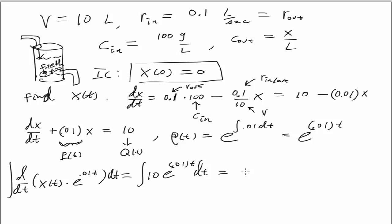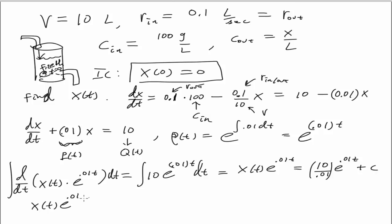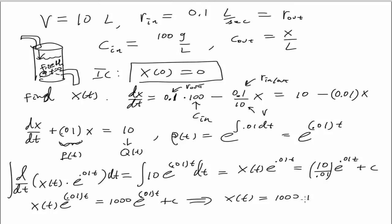Integrating both sides, we get x(t)·e^(0.01t) = (10/0.01)·e^(0.01t) + C, which is 1000·e^(0.01t) + C. Dividing through by e^(0.01t), the general solution is x(t) = 1000 + C·e^(−0.01t).